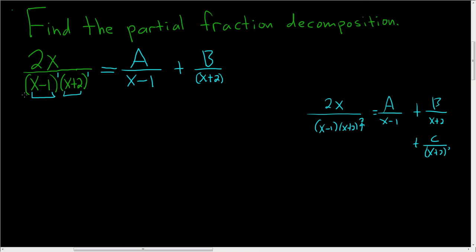All right, so to finish, we multiply both sides by x minus 1 and x plus 2. When we multiply the left-hand side by both of these factors, they go away. So you just get 2x equals...